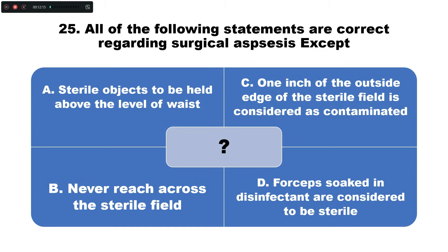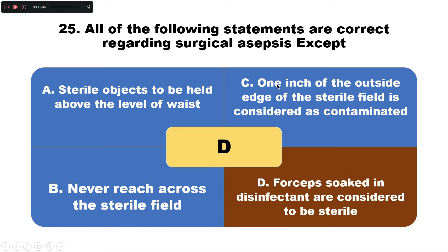Question number twenty-five: All of the following statements are correct regarding surgical sterile surfaces EXCEPT — option A: sterile objects to be held above the level of the waist, B: never reach across the sterile field, C: one inch of the outside edge of the sterile field is considered contaminated, D: surfaces soaked in disinfectant are considered to be sterile. The incorrect statement is option D — surfaces soaked in disinfectant are not considered sterile.